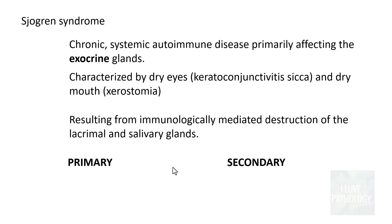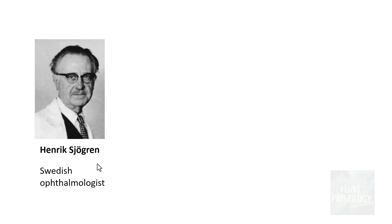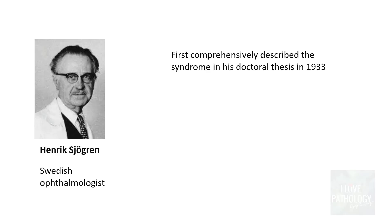It is divided into two categories: primary and secondary. Primary is an isolated disorder, whereas secondary is almost always in association with another autoimmune disease, particularly rheumatoid arthritis, which is the most common associated autoimmune disease for secondary Sjogren's syndrome. This disease is named after Henrik Sjogren, a Swedish ophthalmologist who first comprehensively described this syndrome in 1933 in his doctoral thesis.